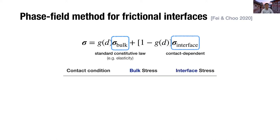There are three contact conditions. The first one is open condition. And in this case, the interface stress should be zero, because interface is an empty space. In this case, the model corresponds to the standard phase field model for open fracture.